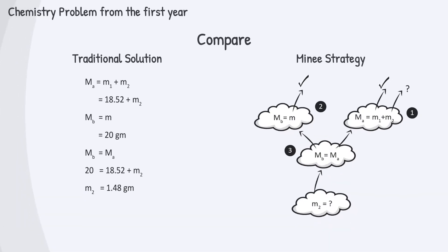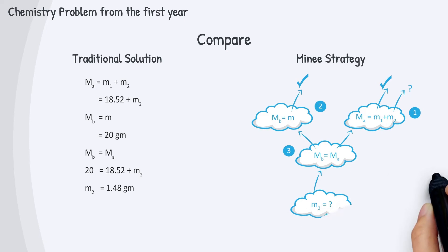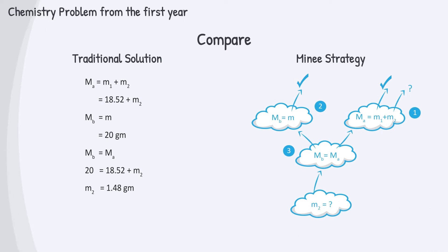Now compare between the traditional solution and My Knee Strategy. Don't forget that My Knee recommended you use colors to enjoy and activate the right lobe of your brain. Now, which one do you prefer?